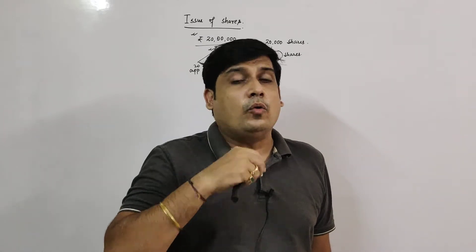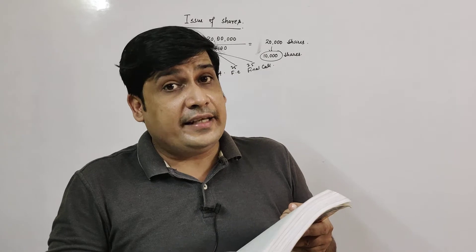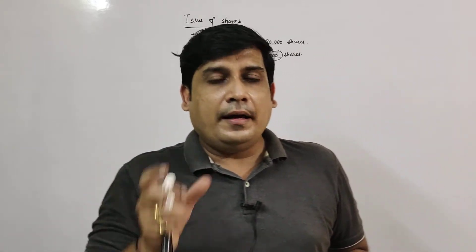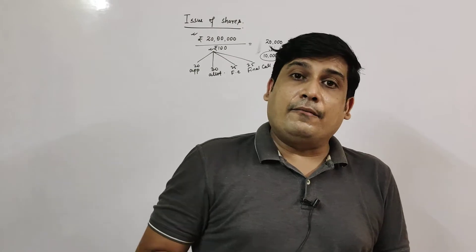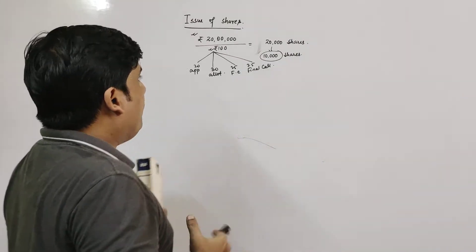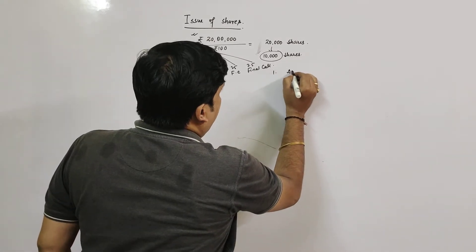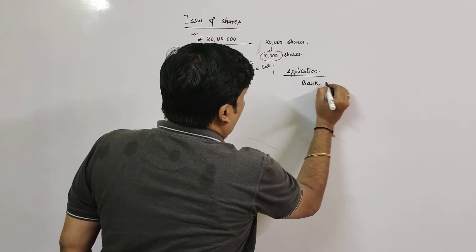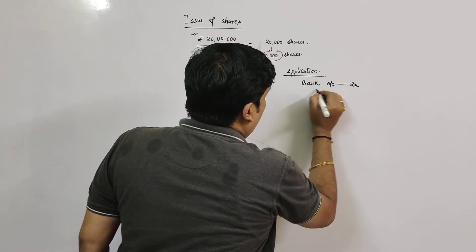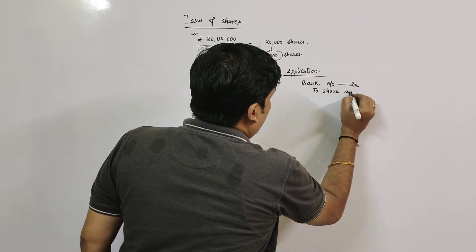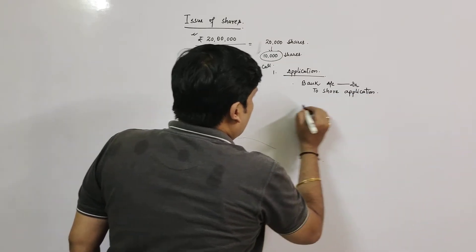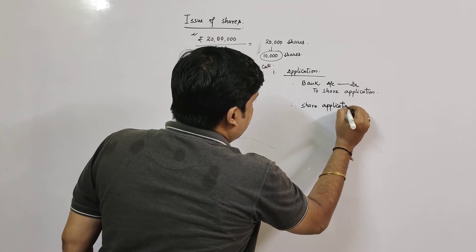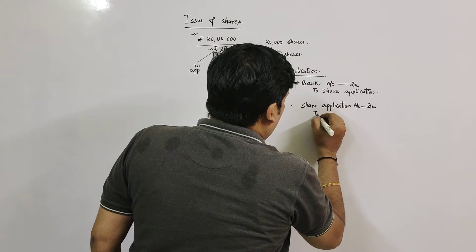The company will also re-issue those forfeited shares to someone else — I will teach you forfeiture and re-issue as well. First, let's complete our four basic journal entries. Starting with application: first entry — Bank Account Dr. to Share Application Account.